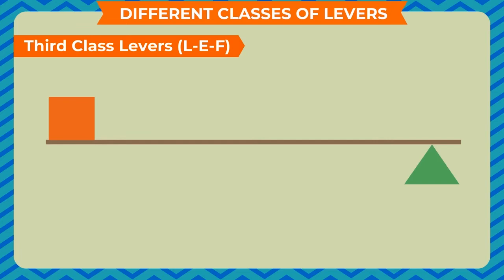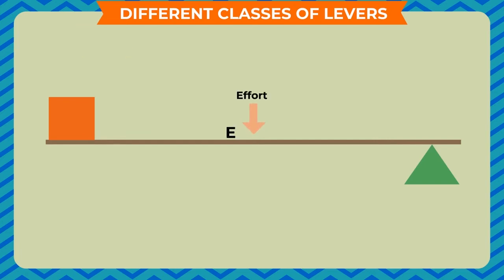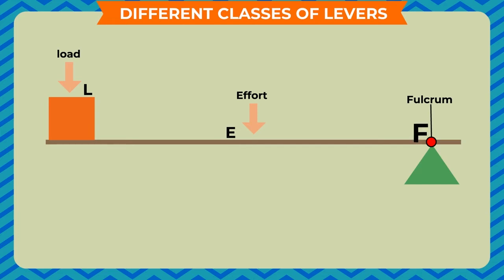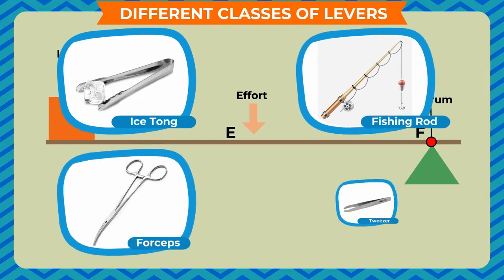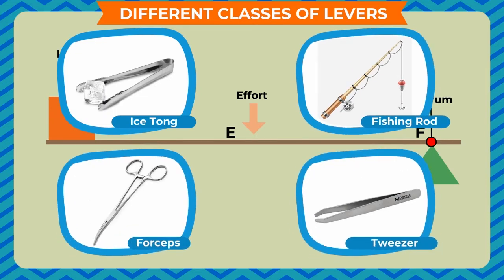Third class levers (L-E-F): Levers in which the effort E is applied between the fulcrum F and the load L are called third class levers. Here, the load L is at one end of the rod and the fulcrum F is at the other end. Ice tong, fishing rod, forceps, tweezer, etc. are examples of third class levers.